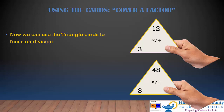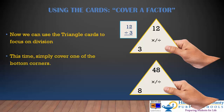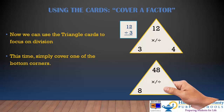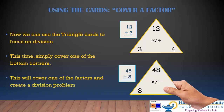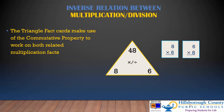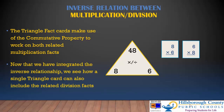So now we can use the triangle cards to focus on division or missing factors. This time cover one of the bottom corners. By covering up the bottom corner, we now have the problem of 12 divided by 3. I could use my multiplication facts — maybe I already know that 3 times 4 is 12, or simply I know my division. Same thing can be had at the bottom: 48 divided by 8. Or I could think, how many groups of 8 would it take to make 48? I explored my array before, so I know 6 times 8 is 48. The triangle fact cards make use of the commutative property to work on both related multiplication facts — 8 times 6 and 6 times 8. And now that we have integrated the inverse relationship, we see how a single triangle card can also include related division facts: 48 divided by 8 and 48 divided by 6.